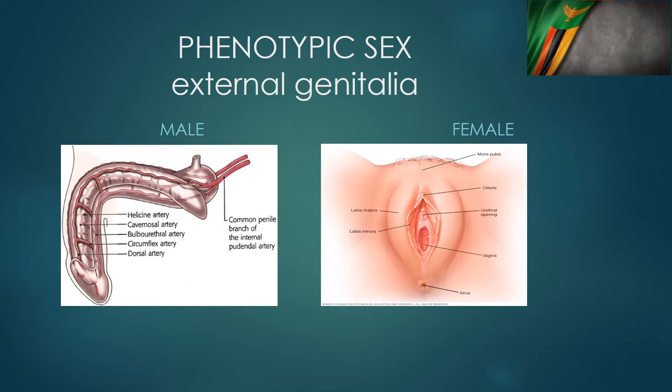Another type of phenotypic sex involves the external genital organs. When someone is undressed in front of you, what do you see? Do you see a penis? Do you see a clitoris, labia majora, labia minora? If you see a penis you say 'male'; if you see labia and a clitoris you say 'female.' That is another categorization under phenotypic sex.